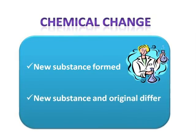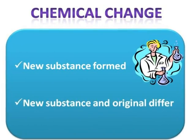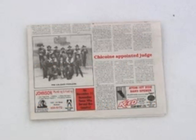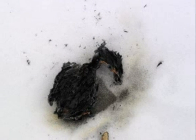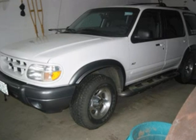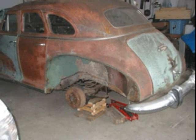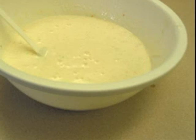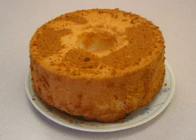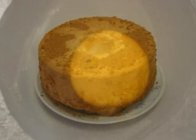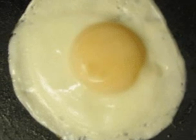In a chemical change, one or more new substances are formed. The new substance is different from the original. Paper becomes ash when burned. A new vehicle becomes rusty after time. Cake mix becomes cake after baking. Raw egg becomes cooked egg after frying.